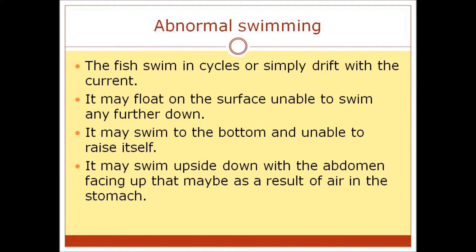Regarding abnormal swimming, the fish may swim in cycles or simply drift with a current. It may float on the surface, unable to swim any further down, or swim to the bottom and be unable to raise itself. It may also swim upside down with the abdomen facing up, which may be as a result of air in the stomach.